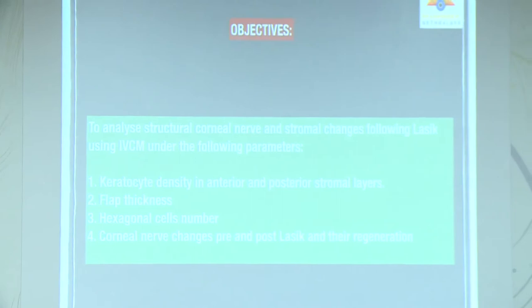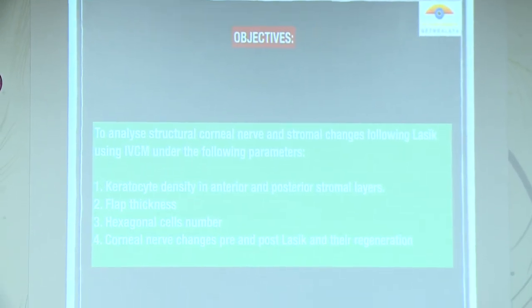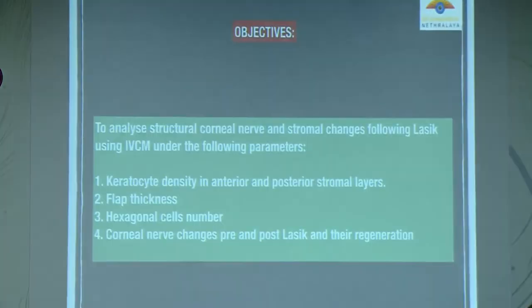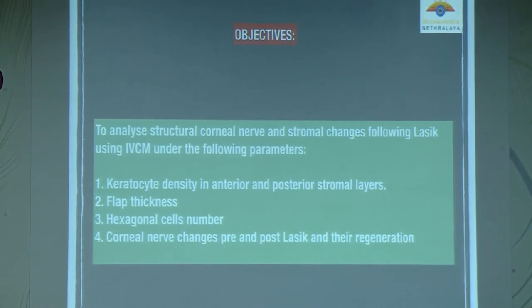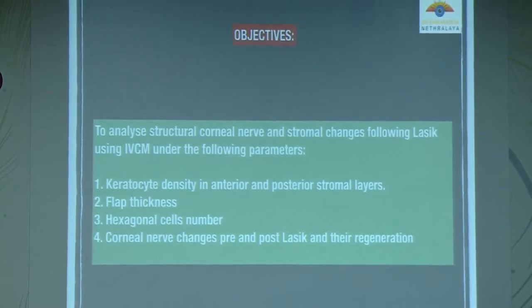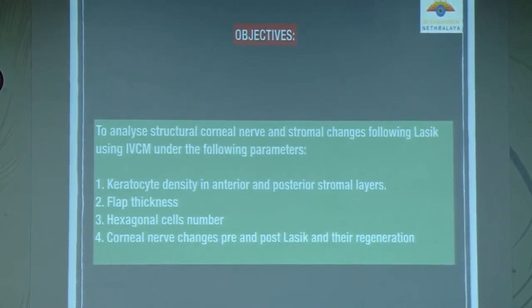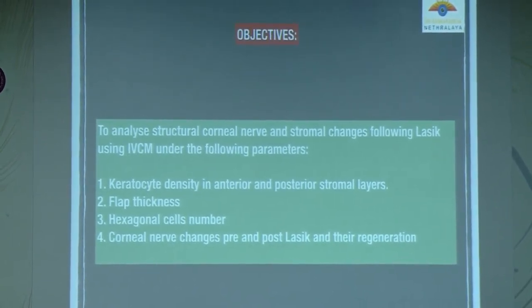The main objectives were to analyze corneal stromal and nerve changes following LASIK using in vivo confocal microscopy, specifically examining keratocyte density in anterior and posterior stromal layers, flap thickness, hexagonal cell numbers, corneal nerve changes pre- and post-LASIK, and their regeneration. Cornea is a transparent avascular structure contributing to nearly three-quarters of the eye's refractive power, microscopically divided into five layers — changes are mainly noted in the epithelium, stroma, and stromal nerve plexus.